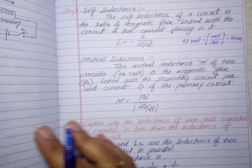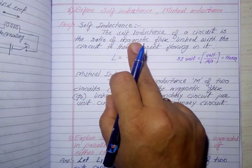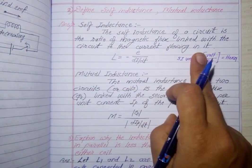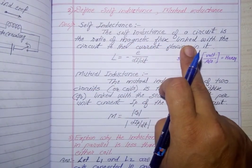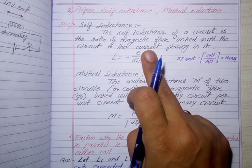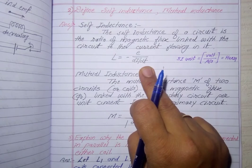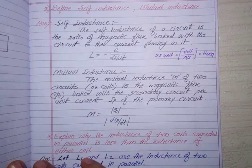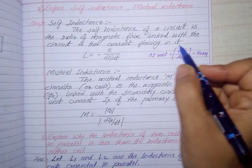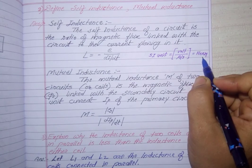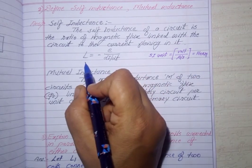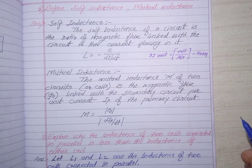The definition of self inductance: the self inductance of a circuit is the ratio of magnetic flux linked with the circuit to the current flowing in the same coil. The formula for self inductance: L is equal to the ratio of induced EMF to the rate of change of current in the same coil. The SI unit for self inductance is henry (H) - that is the ratio of volt per ampere per second. Henry was the scientist, so henry is the SI unit for inductance, just as farad is the SI unit for capacitance and ohm is the SI unit for resistance.